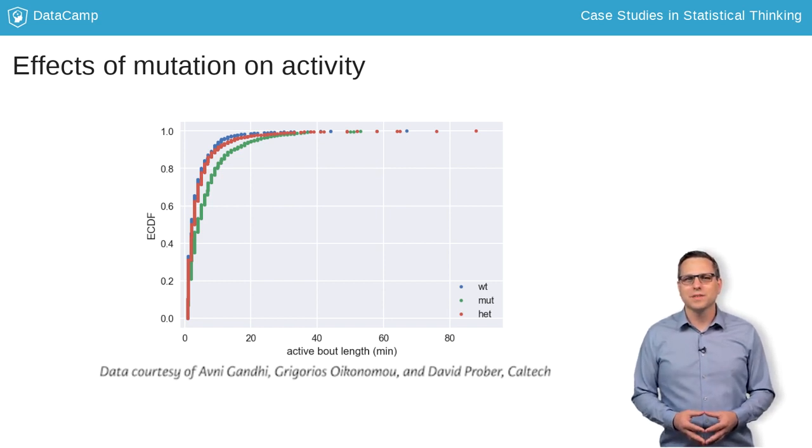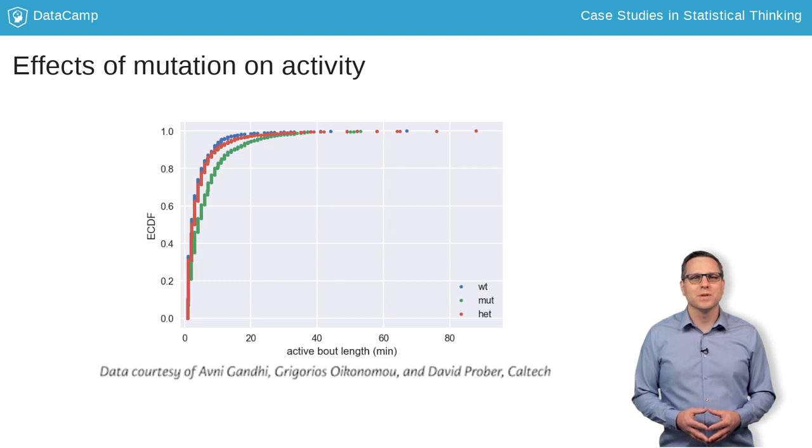We have quantified the differences, and we can see them graphically, and now is a good time to test the hypothesis that there is no difference between the heterozygotic and wild-type fish.